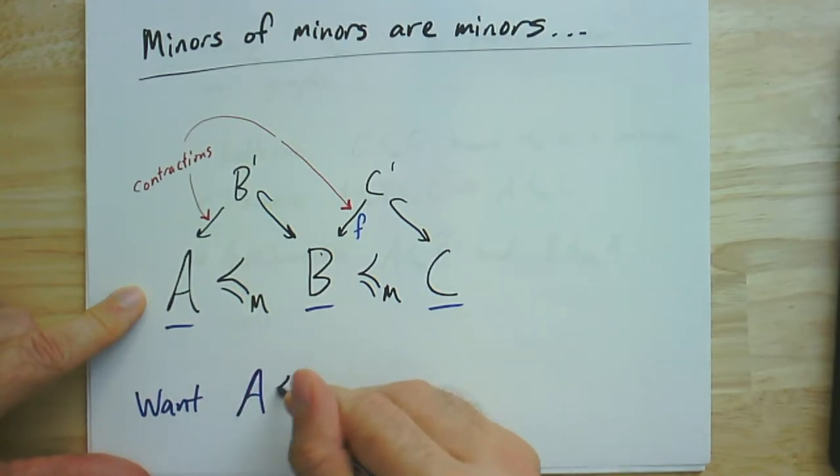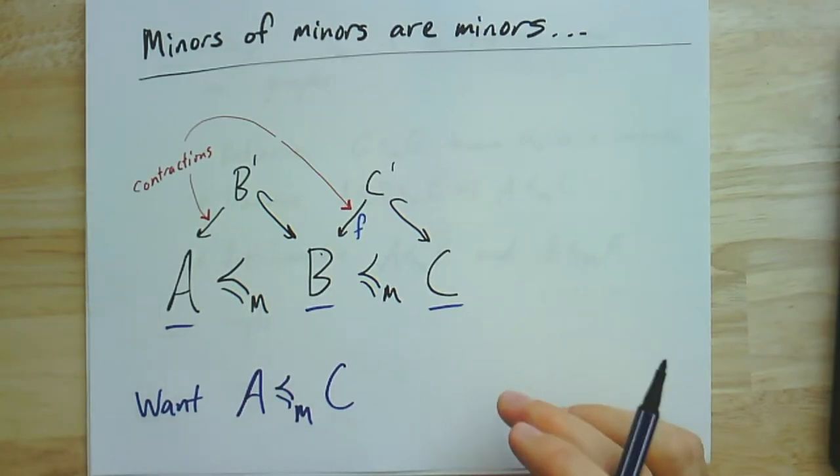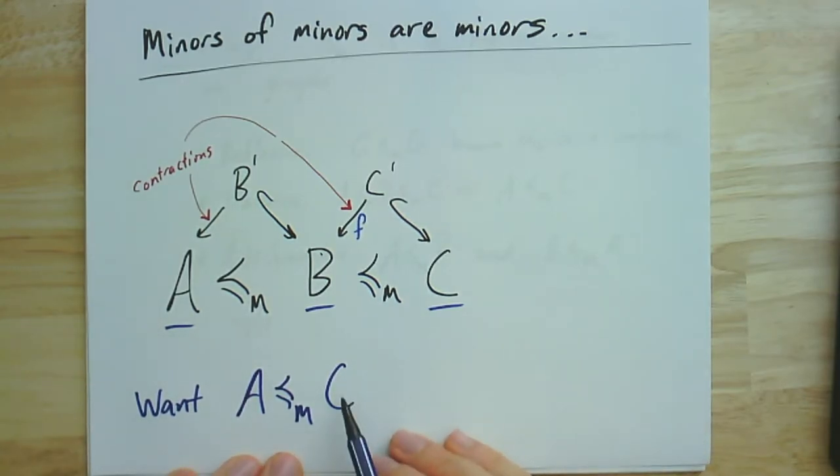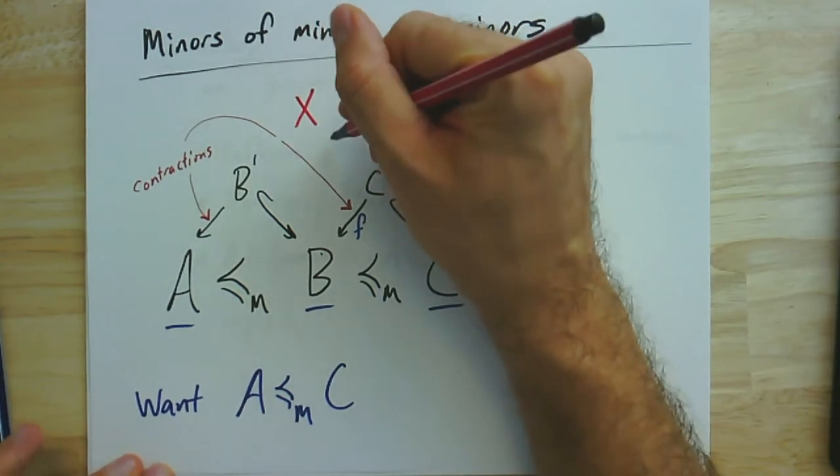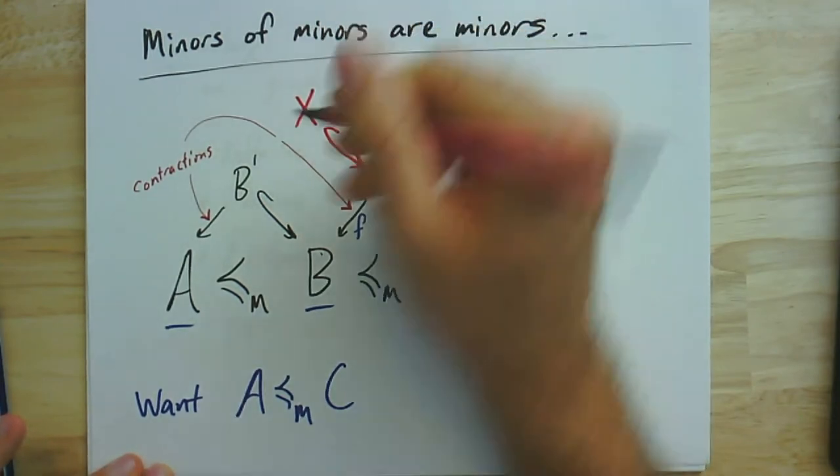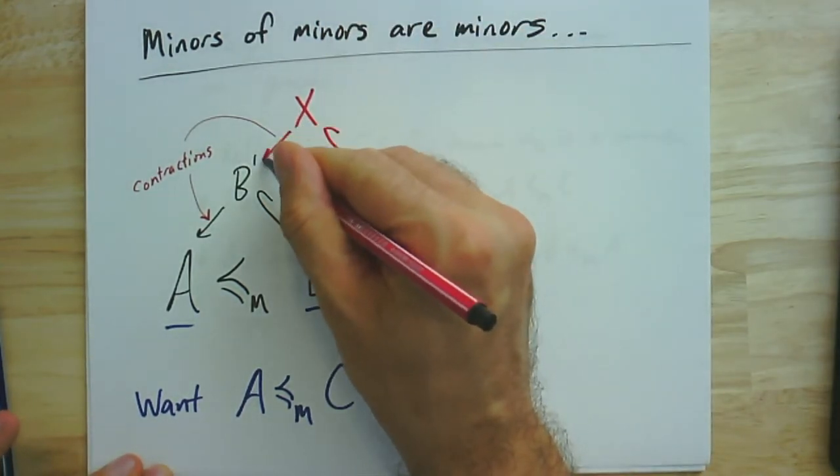And what we would like to say is that A is a minor of C. So this is what we want. We want A is a minor of C. And so in order to do that, we would need to find some subgraph of C that contracts to A. And the way we'll do it, in fact, is to find another subgraph of C prime that contracts to B prime.